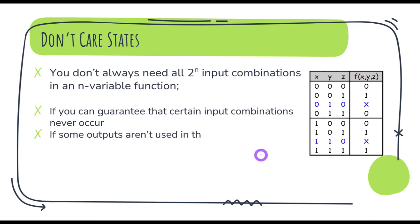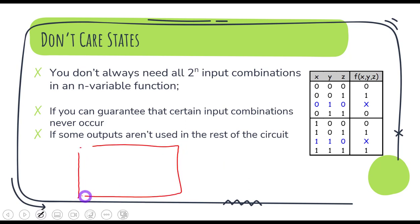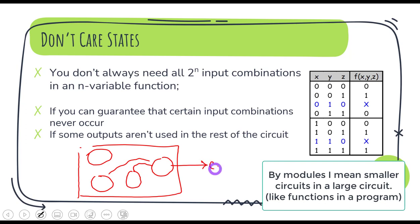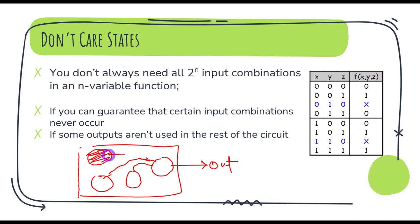There is another scenario where the output of a certain circuit is not used in the rest of the circuit. We may have a large circuit with smaller modules contributing to the final output. But if a particular module's output is not used anywhere in the circuit, and we can guarantee that wherever it was used as an input it will never occur — because maybe we have disconnected it — then we can use it as a don't care condition.